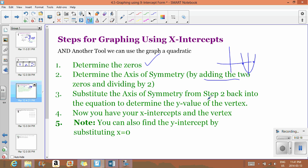Once you have this value, you're going to take the value you got from step two, and you're going to substitute it back into the equation to get the y-value of your vertex. Once you have that, you have your x-intercepts, your vertex. You can find your y-intercept by making x equal to zero, and you have all your key points, vertex, x-intercepts, and your y-intercept.